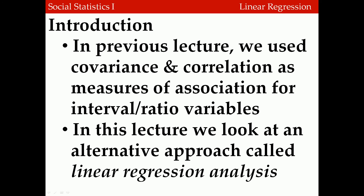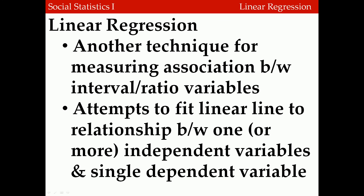In a previous lecture, we used covariance and correlation as measures of association for interval ratio variables. In this lecture, we're going to look at an alternative approach called linear regression analysis. Linear regression is another technique for measuring the association between interval ratio variables, and attempts to fit a linear line to the relationship between one or more independent variables and a single dependent variable.